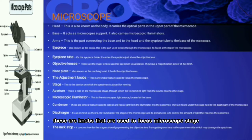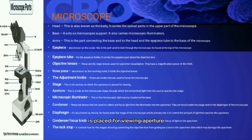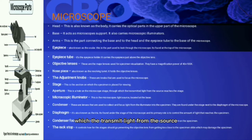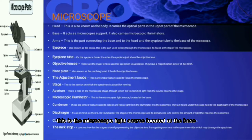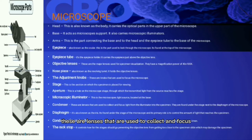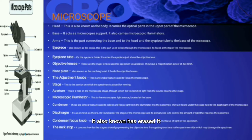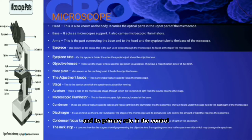Nosepiece — also known as revolving turret, it holds the objective lenses. Adjustment knobs — these are knobs used to focus the microscope. Stage — this is the section on which the specimen is placed for viewing. Aperture — this is the hole on the microscope stage through which transmitted light from the source reaches the stage. Microscopic illuminator — the microscope light source located at the base. Condenser — lenses used to collect and focus light from the illuminator onto the specimen, found under the stage, with its primary role being to control the amount of light reaching the specimen.